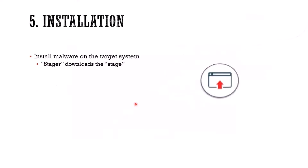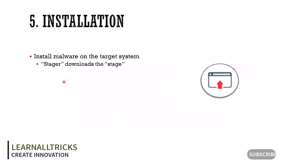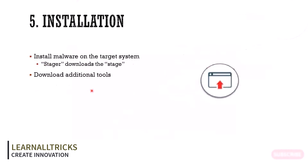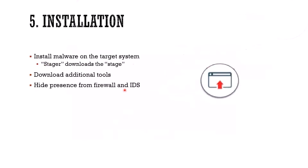We've downloaded the weapon — now it's time to install it. Let's install the malware on the target. The stager downloaded the stage, and now it's time for the stage to be installed. We might download additional tools, hide our presence from the firewall or intrusion detection, and set up a backdoor or remote access.